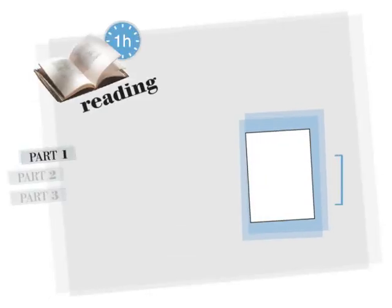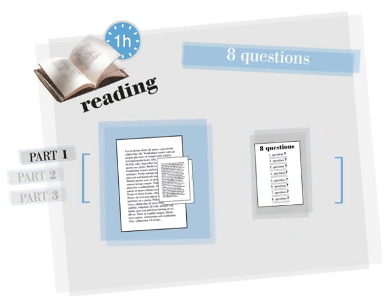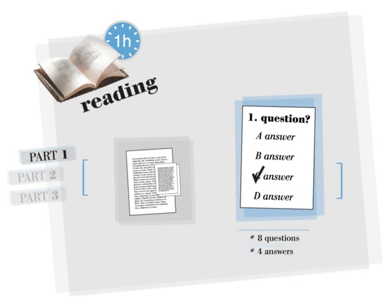In this part, there are eight questions based on a text or related texts. Each question has four possible answers: A, B, C, and D. You must choose the one you consider most suitable.